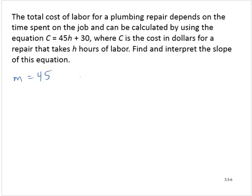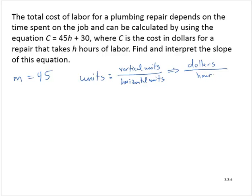And so to interpret the units, we think of the vertical units, the output units, over the horizontal units, the input units. And so in this case, the vertical units, that's cost in dollars. The horizontal units, H, that's hours. And so the units on the slope are dollars per hour. We usually go with the singular in the denominator.